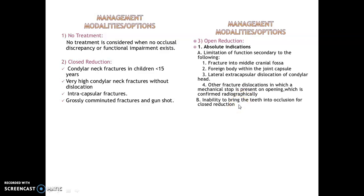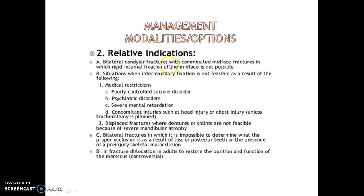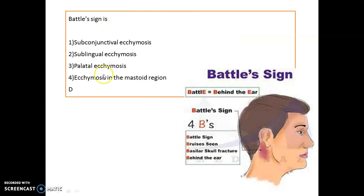Relative indications for open reduction include bilateral condylar fracture where rigid internal fixation is not possible, bilateral fracture where proper occlusion cannot be determined, and fracture dislocation affecting the position and function of the meniscus. Battle sign is ecchymosis in the mastoid region — remember the mnemonic 'BEBE': Battle sign, Bruise seen, Basilar skull fracture, Behind the Ear.